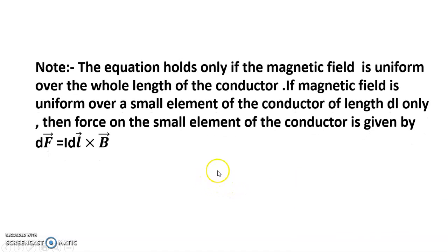Note: The equation holds only if the magnetic field is uniform over the whole length of the conductor. If the magnetic field is uniform over a small element of the conductor of length dl only, then the force on the small element of the conductor is given by dF = idl × B. Thanks for watching.